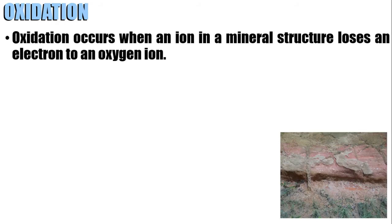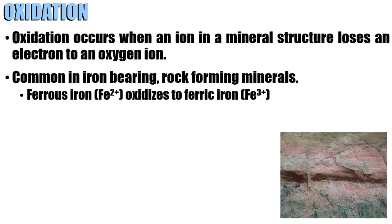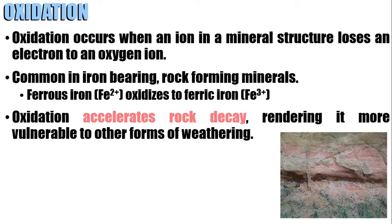Next, we have oxidation. Oxidation occurs when an ion in a mineral structure loses an electron to an oxygen ion. Oxidation is common in iron-bearing and rock-forming minerals. For example, ferrous iron Fe²⁺ oxidizes to ferric iron Fe³⁺ — it lost an electron, which was most probably captured by an oxygen ion. Oxidation accelerates rock decay, rendering it more vulnerable to other forms of weathering.